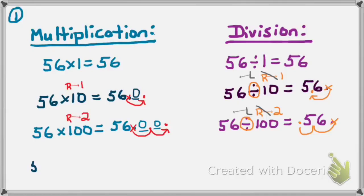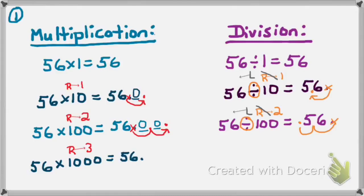Let's try another one. 56 times 1,000 — I know that 1,000 is greater than 1. I'll move my decimal to the right three places. It's multiplication, so I keep it to the right. I write down the 56, remove the invisibility cloak to find the decimal, and move my decimal three places to the right, adding place value zeros as needed. So 56 times 1,000 is 56,000.